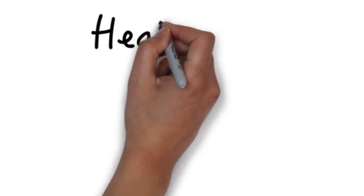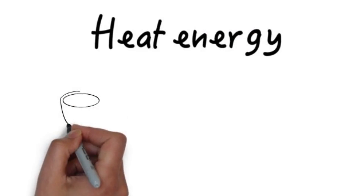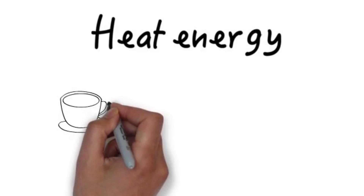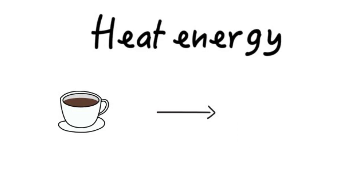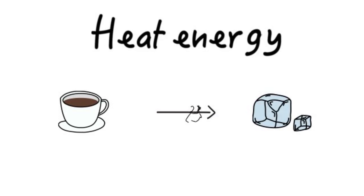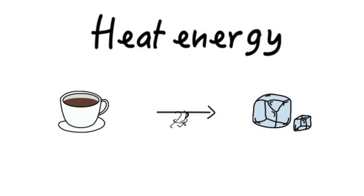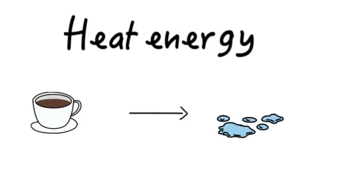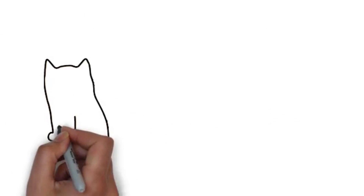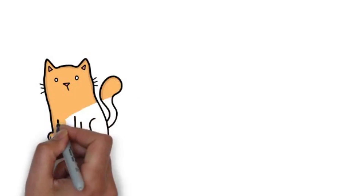Heat energy, or thermal energy, is the result of the vibrating motion of particles. Heat energy can be transferred from warmer objects — objects with more particle motion energy — to cooler objects, objects with less particle motion. Heat can be produced in a number of different ways.